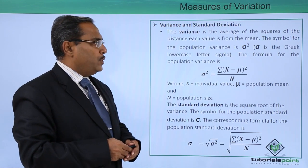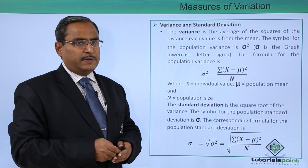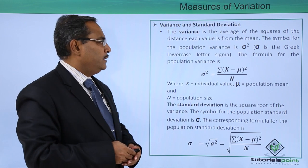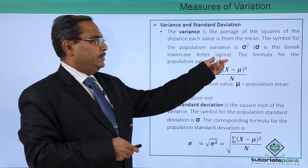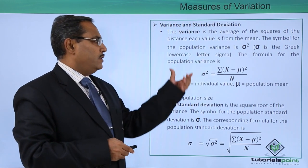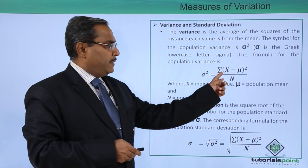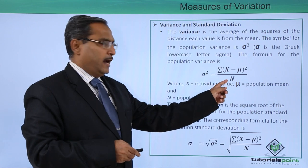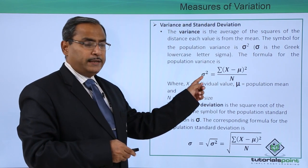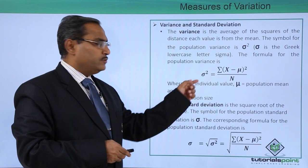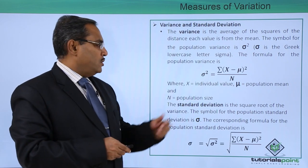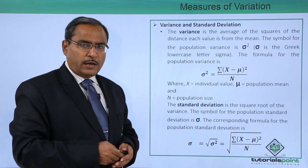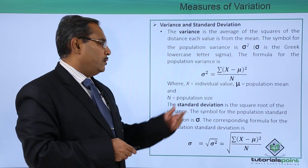The symbol for the population variance is sigma squared, where sigma is the Greek lower case letter. The formula for the population variance is the sum of (x minus mu) squared, divided by capital N. Here x is the individual value, mu is the population mean, and capital N is the population size.